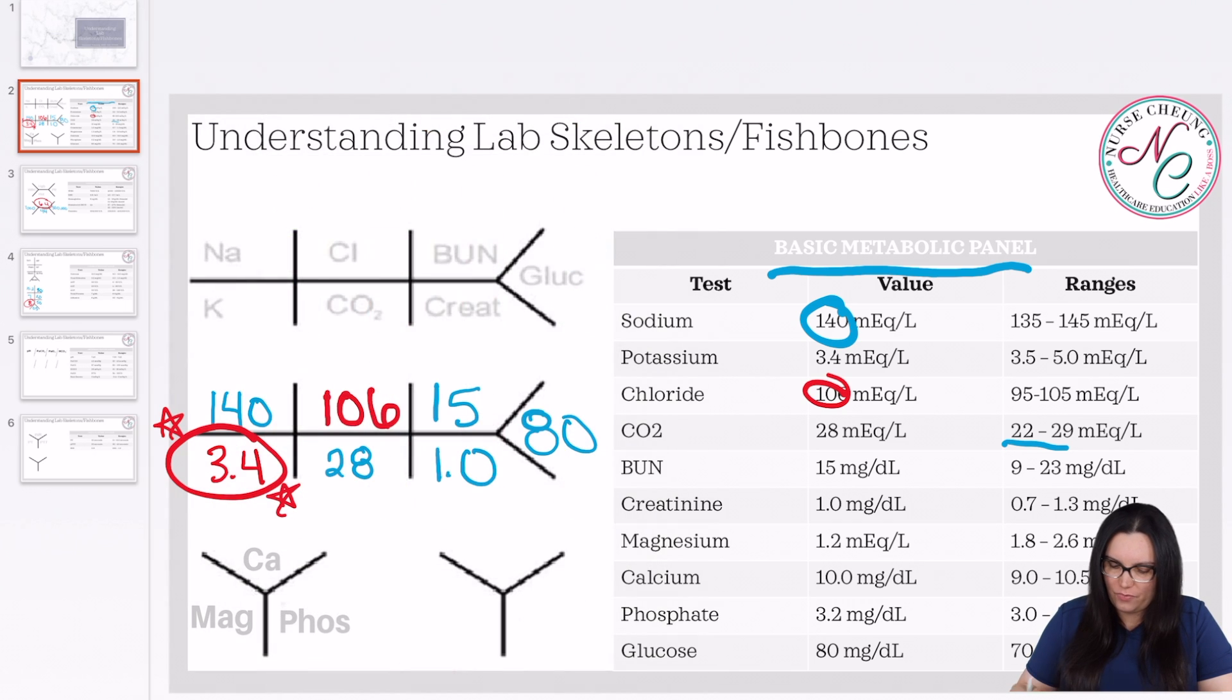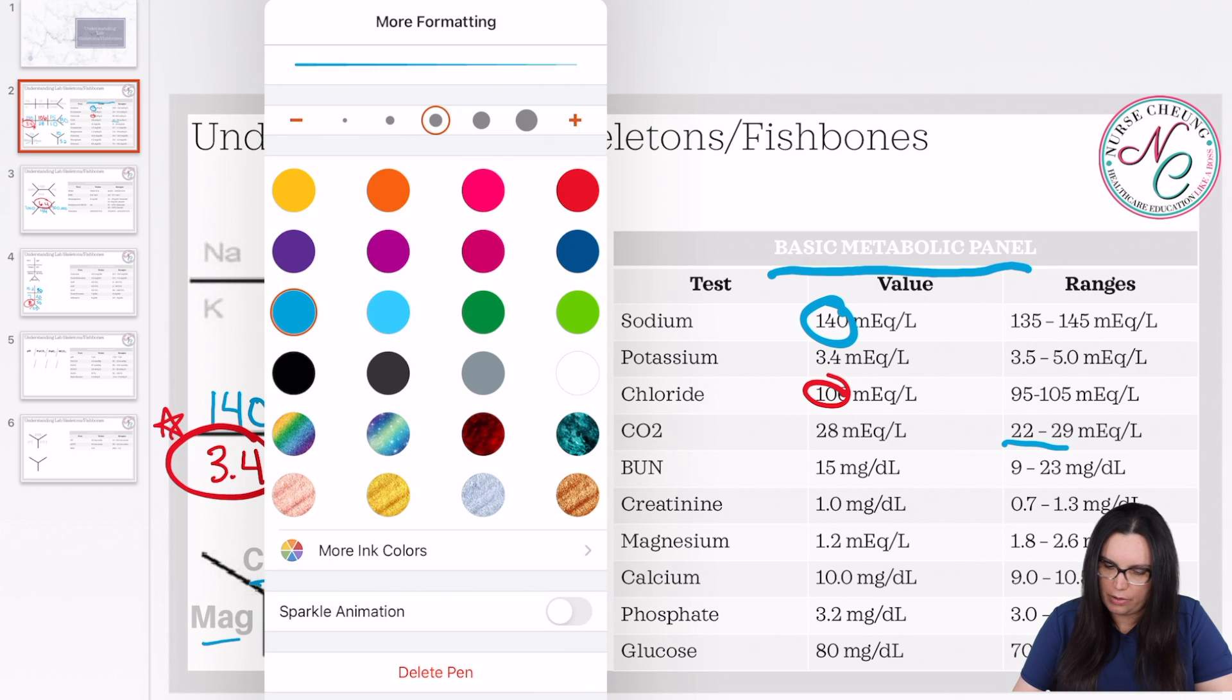So that way we can start replacing it before it gets worse. But before I move on, let's look at our next fishbone, which is for our calcium, our mag, and our FOS. So we take a look at our calcium. Our calcium is 10. That's beautiful. It falls within normal. Our FOS is 3.2. Again, beautiful. That falls within our normal.